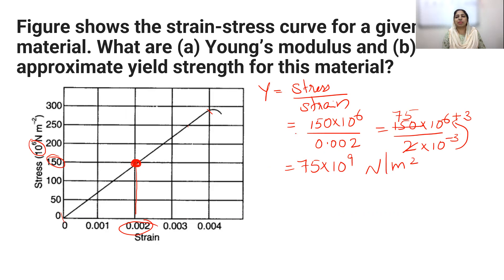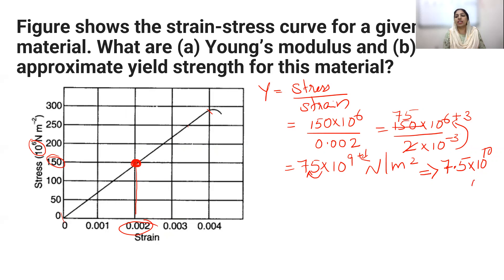The answer is 75 × 10⁹ Newton per meter square. Writing this in scientific notation with the decimal point after the first digit, Young's modulus is 7.5 × 10¹⁰ Newton per meter square. That completes part A of the question.